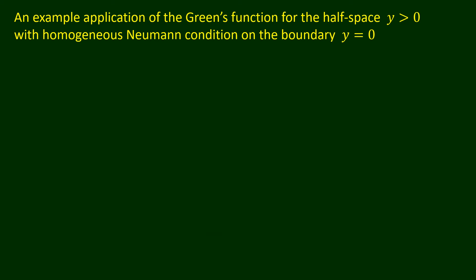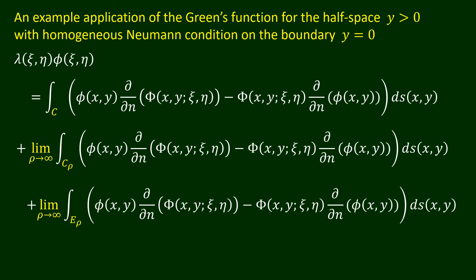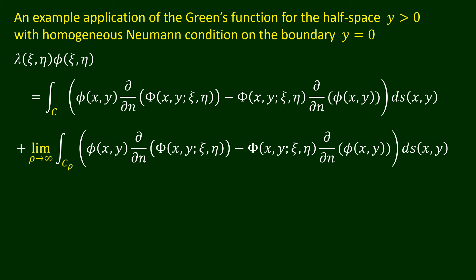Here is the boundary integral solution for the potential problem under consideration. Let us take a look at the last line integral over e_rho, where e_rho is the part of the x-axis from x equals minus rho to x equals rho. From the given boundary condition of the potential problem, the normal derivative of phi is 0 on e_rho. Since we take capital Phi to be the Green's function for the half space with the homogeneous Neumann condition, the normal derivative of capital Phi is also 0 on e_rho. Hence, the line integral over e_rho is equal to 0.